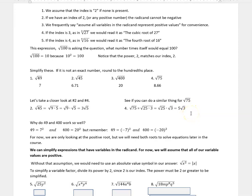Why do 49 and 400 work so well? We just said that those are perfect squares, but remember that negative 7 to the second power would also be 49, and negative 20 to the second power would also be 400. So for now, we're just looking at the positive root, but we will need both roots to solve equations later in the course.